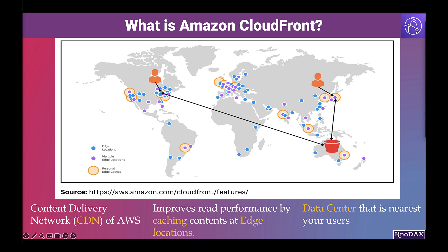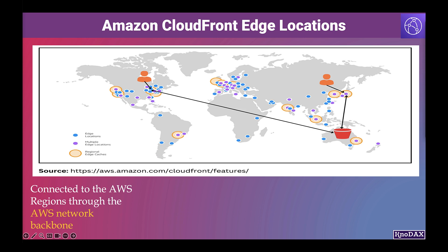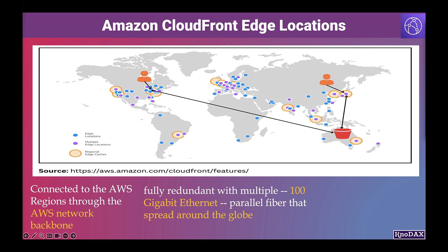CloudFront edge locations are connected to the AWS regions through the AWS network backbone, which is a fully redundant network with tens of thousands of networks with 100 gigabit bandwidth. This helps improve origin fetches and dynamic content acceleration. There are 400 plus edge locations, and requests are automatically routed to the nearest edge location.